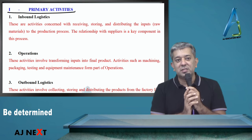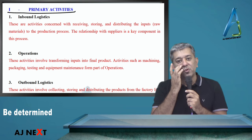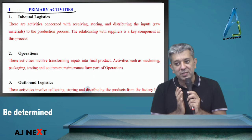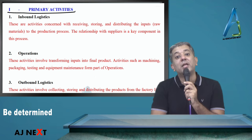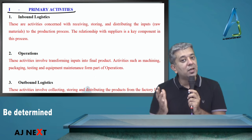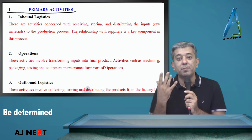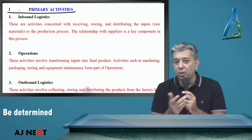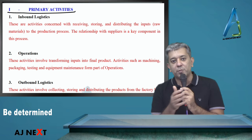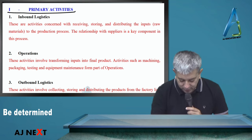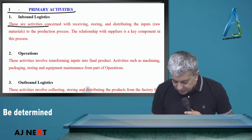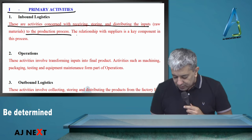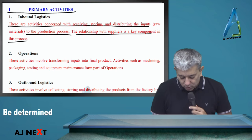Jo aapki purchasing policy hai, terms waghira hai, all those things will also be coming as part of secondary activities. Basically, how do you get the raw material — aap loog kidhar kidhar se material mangvate ho, national hain, international se bhi raw materials mangvate ho — all those procedures involved wo sabkuch iske inder aayega. These are activities concerned with receiving, storing and distributing the inputs to the production process. The relationship with suppliers is also a key component in this process.